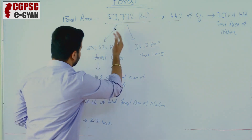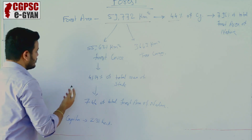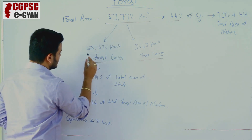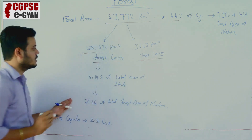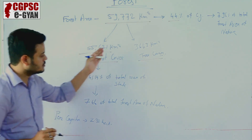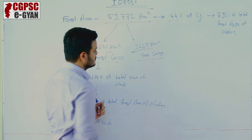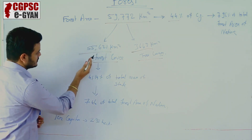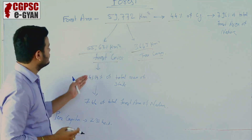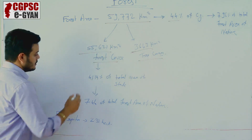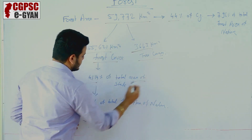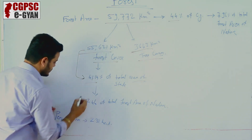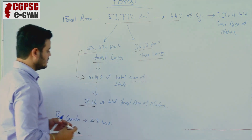This 59,772 km² can be divided into two parts: forest cover and tree cover. The forest cover is 55,621 km², which is 41.4% of the total area of the state and 7.46% of the total forest area of the nation. The tree cover is 3,663 km².